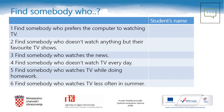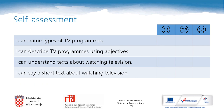If you want to play some more, this is a game for you — it is called Find Somebody Who. Talk to your classmates and find at least one person for each question. Have fun! And it's time to check your progress. I can name types of TV programs. I can describe TV programs using adjectives. I can understand texts about watching television. I can say a short text about watching television. Put a tick under the right heading.